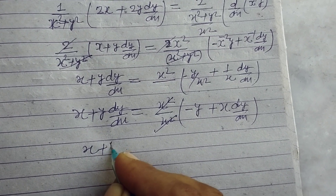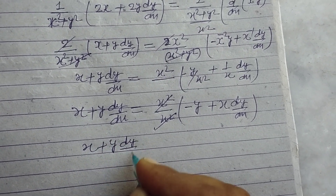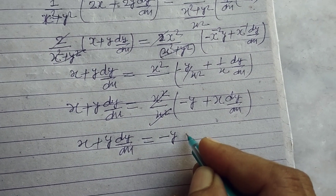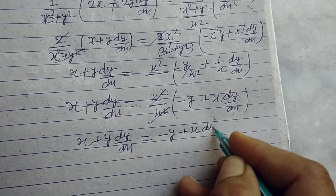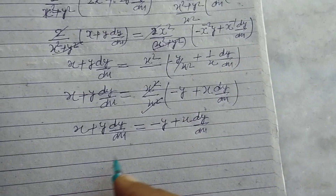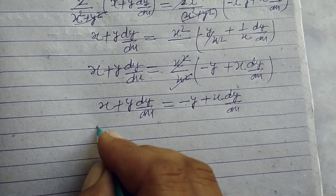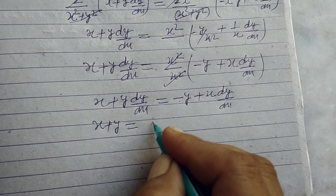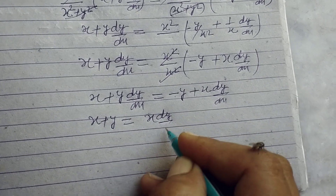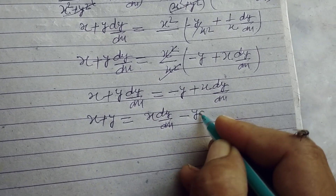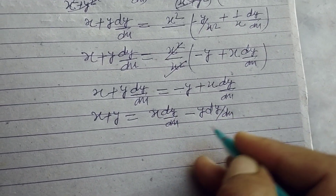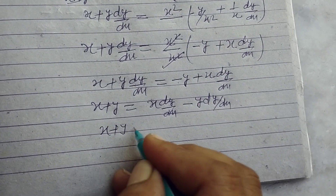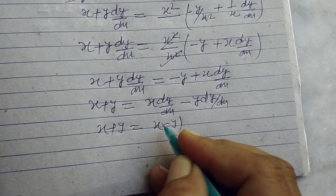We got x + y·dy/dx = −y + x·dy/dx. Bringing y towards x and rearranging: x + y·(dy/dx) − x·(dy/dx) = −y. Therefore dy/dx equals (x + y)/(x − y).